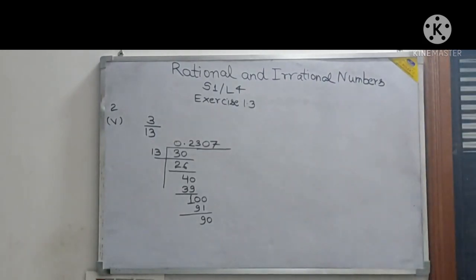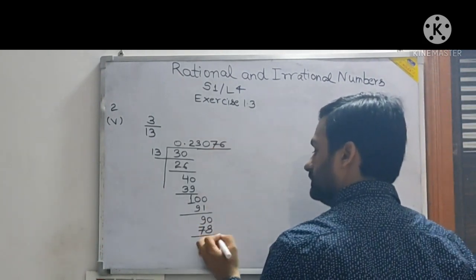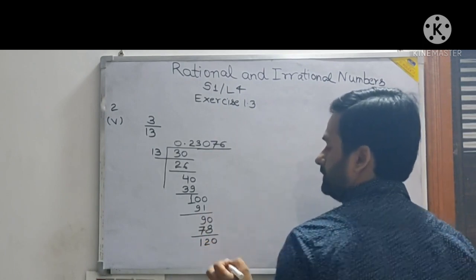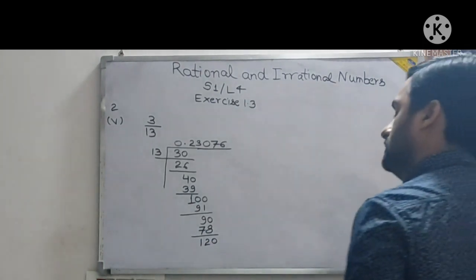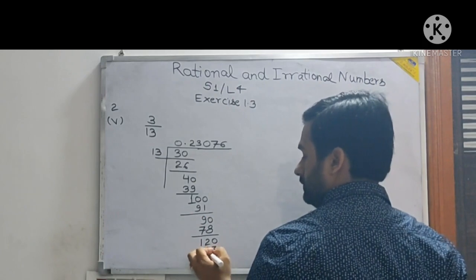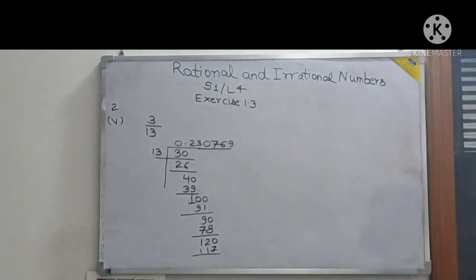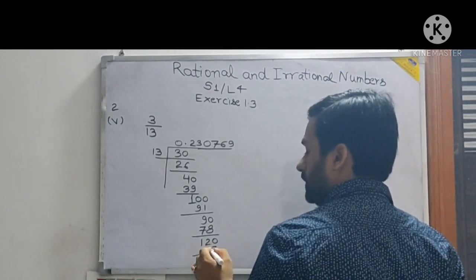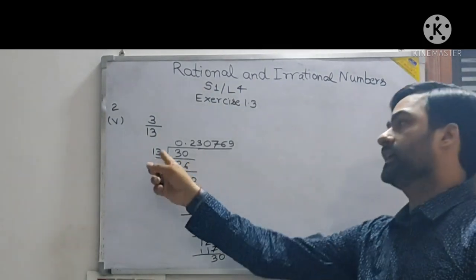13 sixes are 78. 12 remains. Again 120. Then 13 nines are 117. 3 remains. And this one is 3, again becomes 30. Don't you feel again the same thing? That means what it will be.